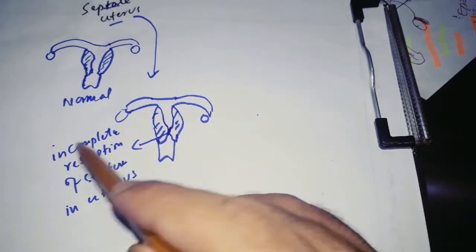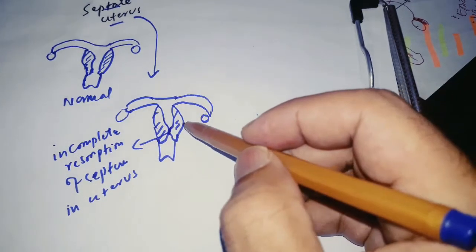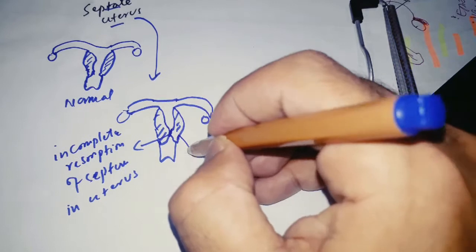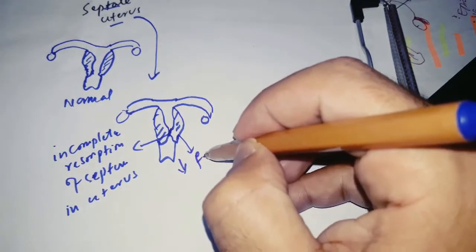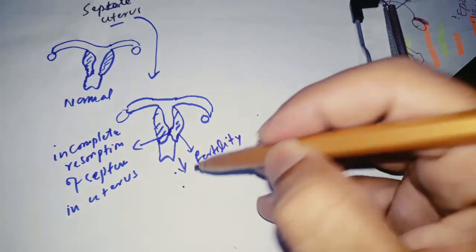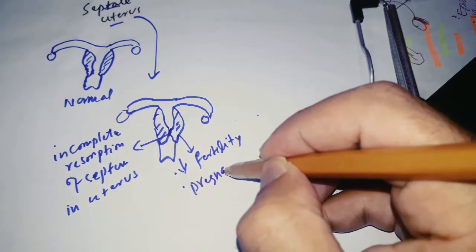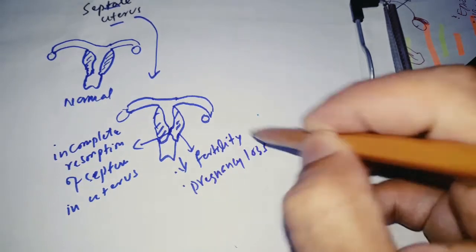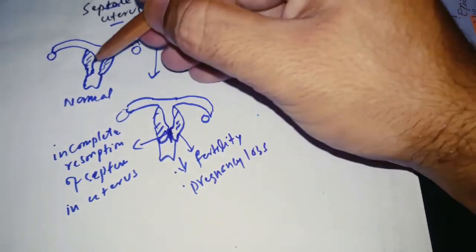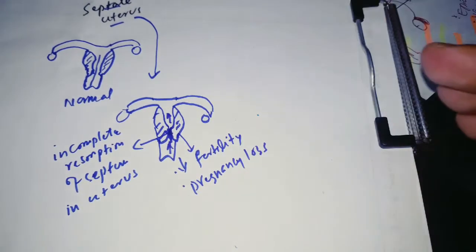Septate uterus results from incomplete resorption of the septum inside the uterus. Normally the septum must be resorbed; if it isn't, this is called septate uterus. There will be decreased fertility and increased chances of pregnancy loss. You can see the septum dividing the uterine cavity — in a normal uterus there is no septum.